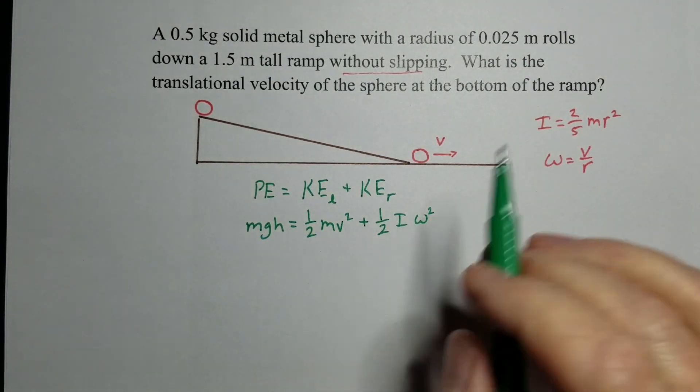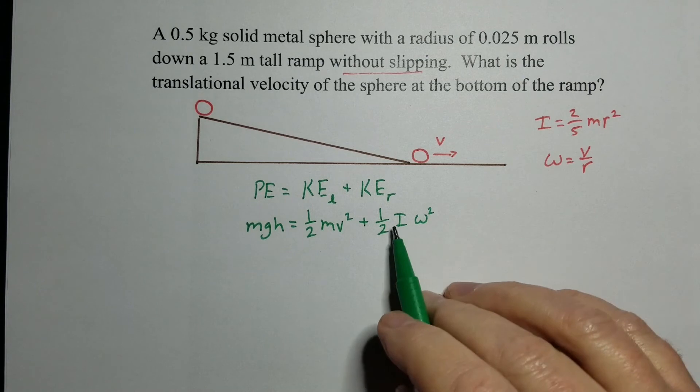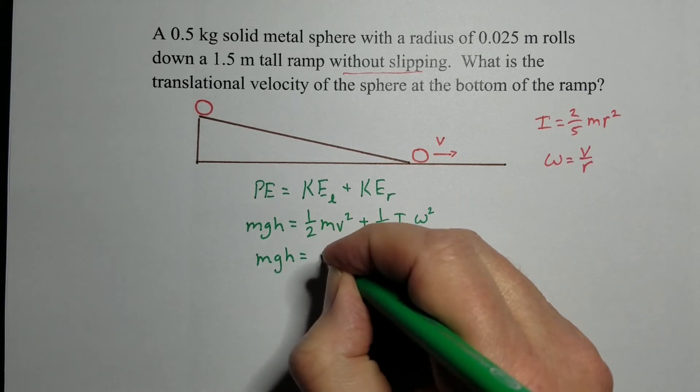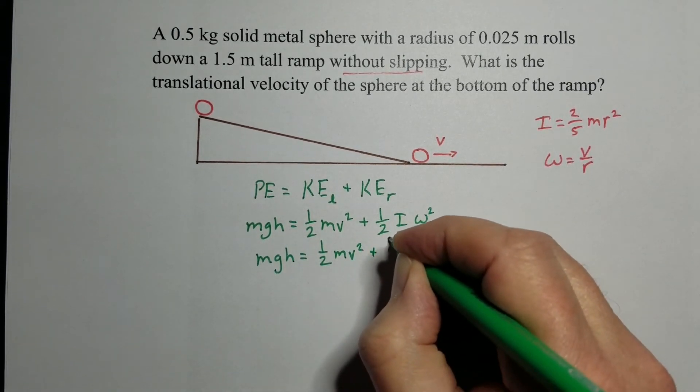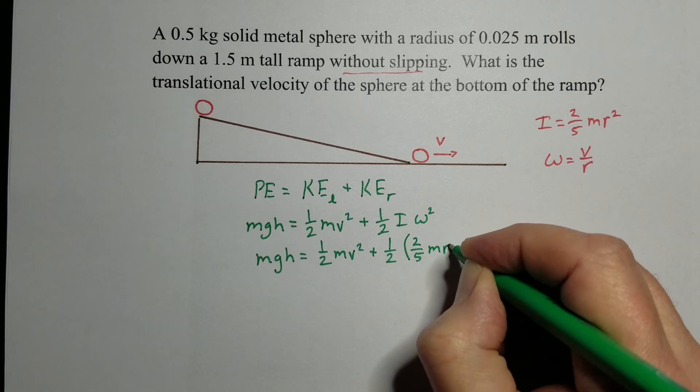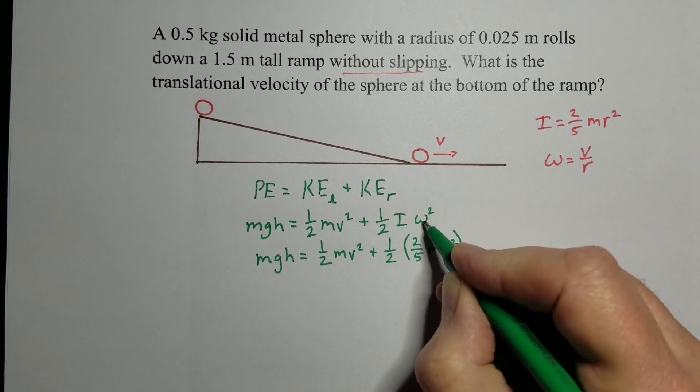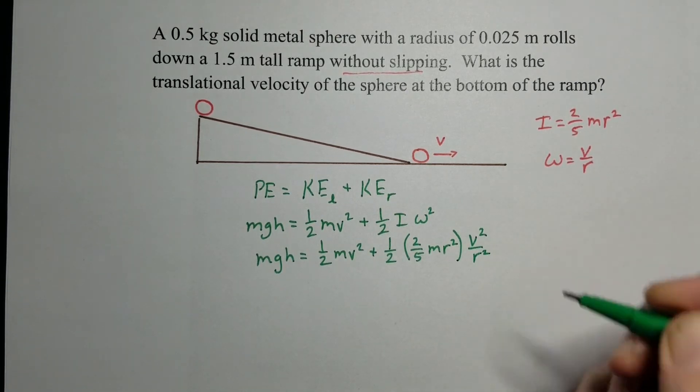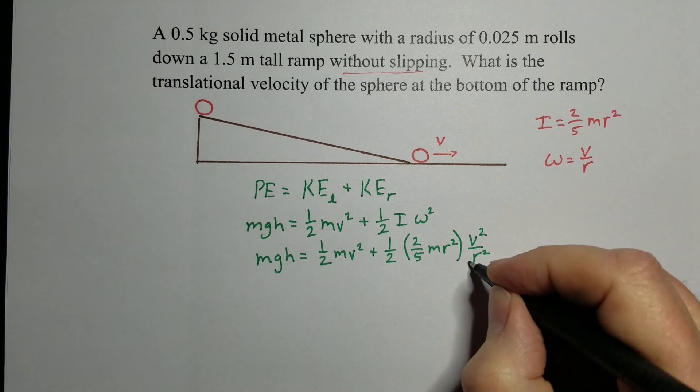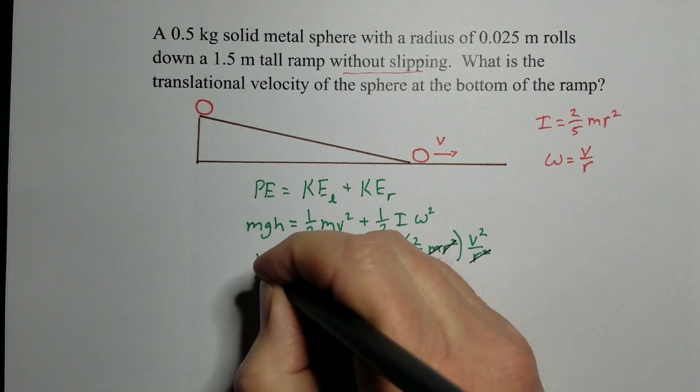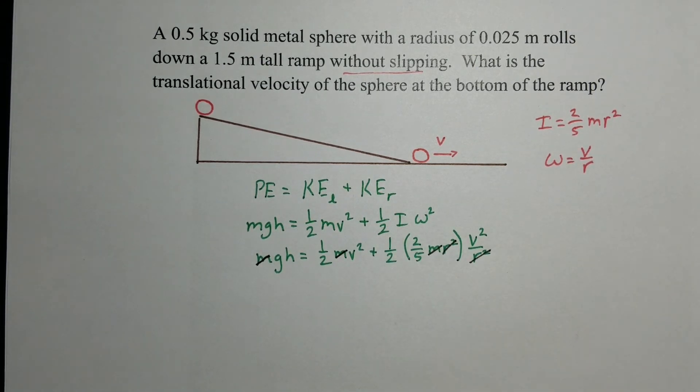But this time, let's not plug in the numbers. Let's actually see what we can get. So I'm going to go ahead and substitute i and omega in. So we get mgh equals one-half m v squared plus one-half two-fifths m r squared omega squared. So that would be v squared over r squared. And now look what we can do. This is nice because this r squared cancels out that r squared. There's a mass in every term, so that goes away. Let's clean that up a little bit.